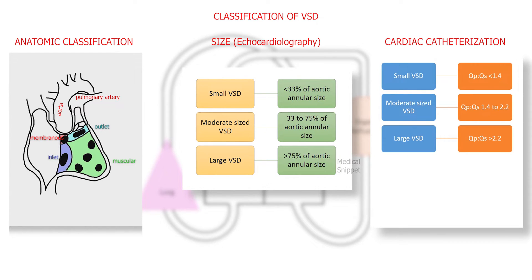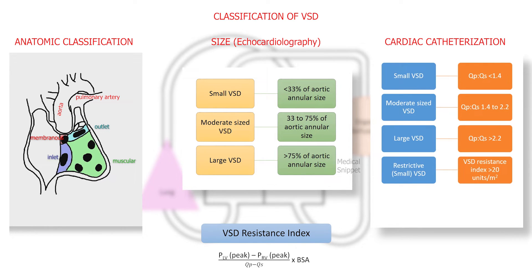CAF study can also find the VSD resistance index. If the index is more than 20 units per meter square the VSD is called restrictive VSD. Small VSDs are usually the restrictive type. If the index is less than 20 units per meter square the VSD is called non-restrictive VSD, these are usually the large VSDs.